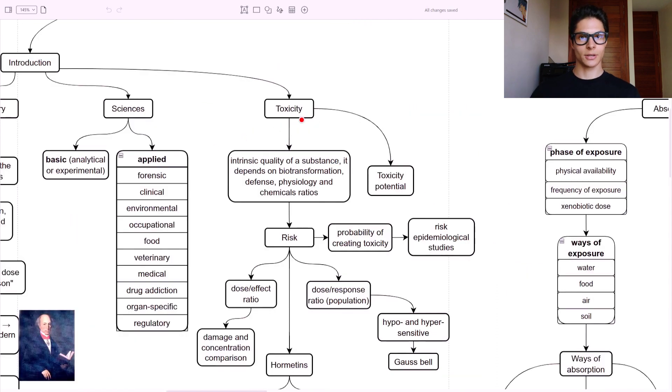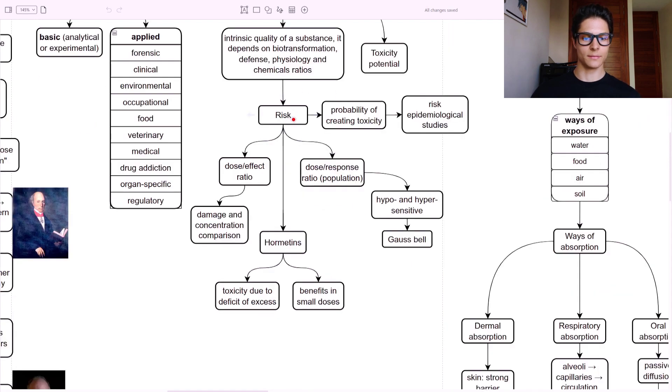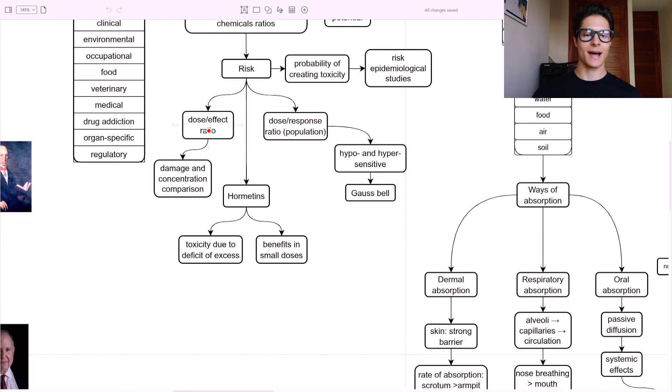So what is toxicity then? Toxicity is the intrinsic quality of a substance and it depends on biotransformation, defense, physiology, and chemical ratios. From the toxicity, we can obtain the toxicity potential of a substance. Then from that, we can have the risk. The risk is the probability of creating toxicity. And we can classify the risk using risk epidemiological studies. We will for sure have a video talking about this. And in the risk, we have the dose-effect ratio and the dose-response ratio.